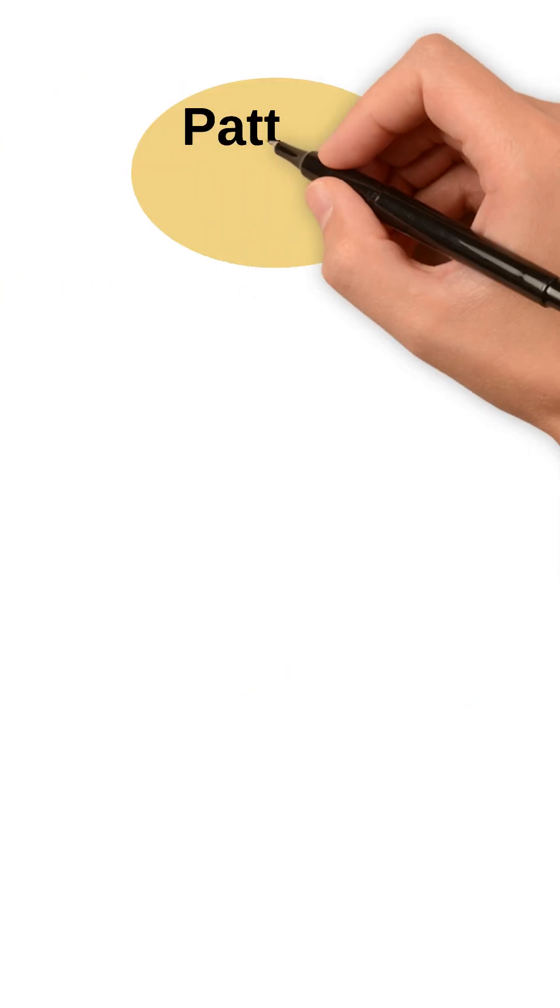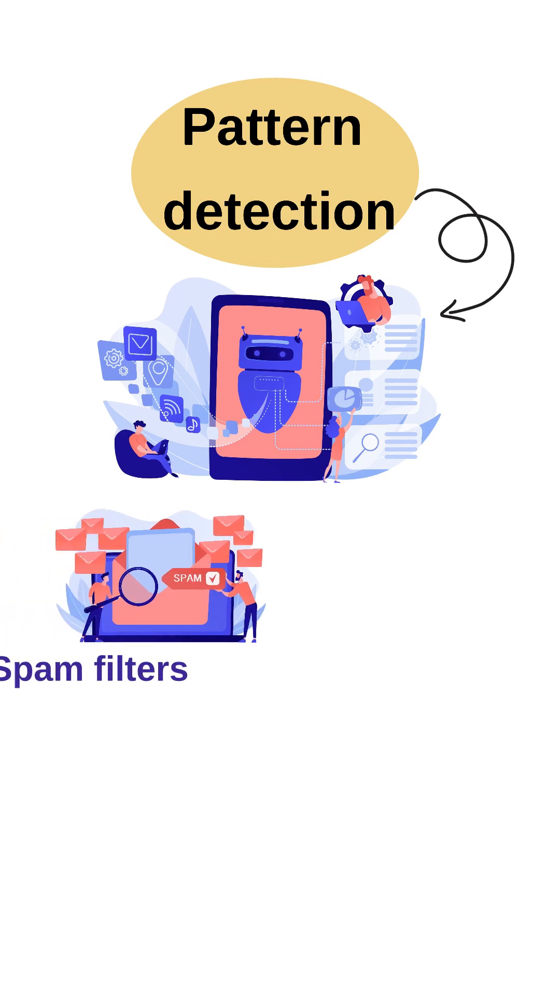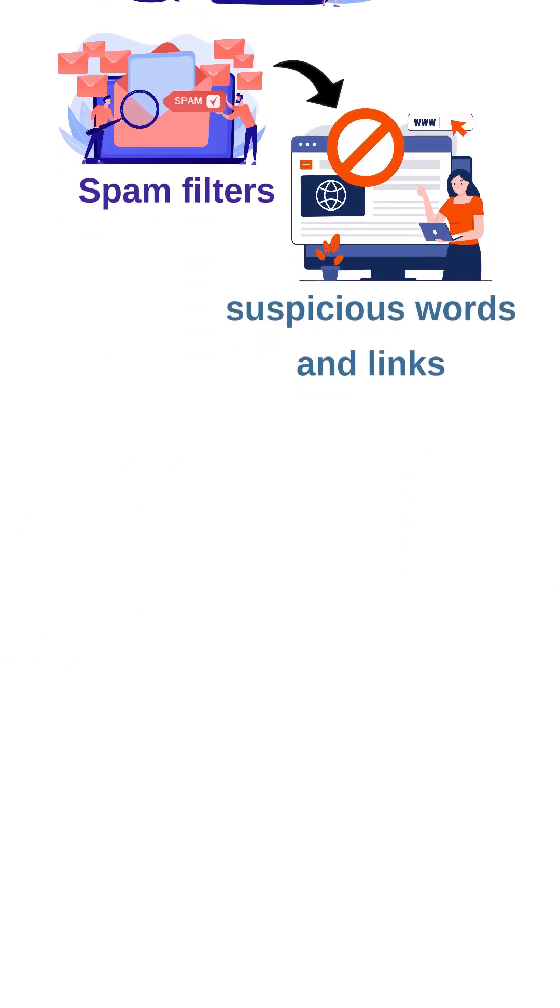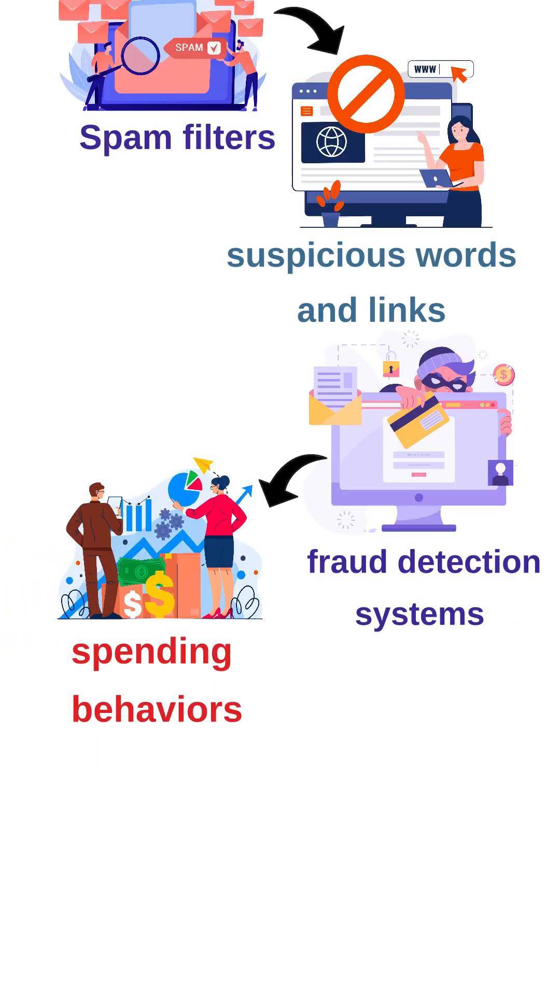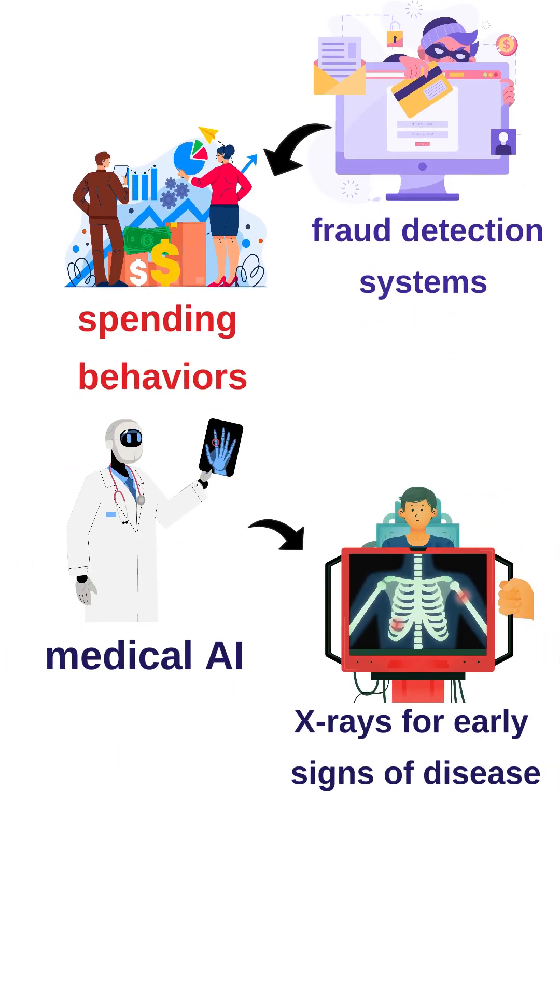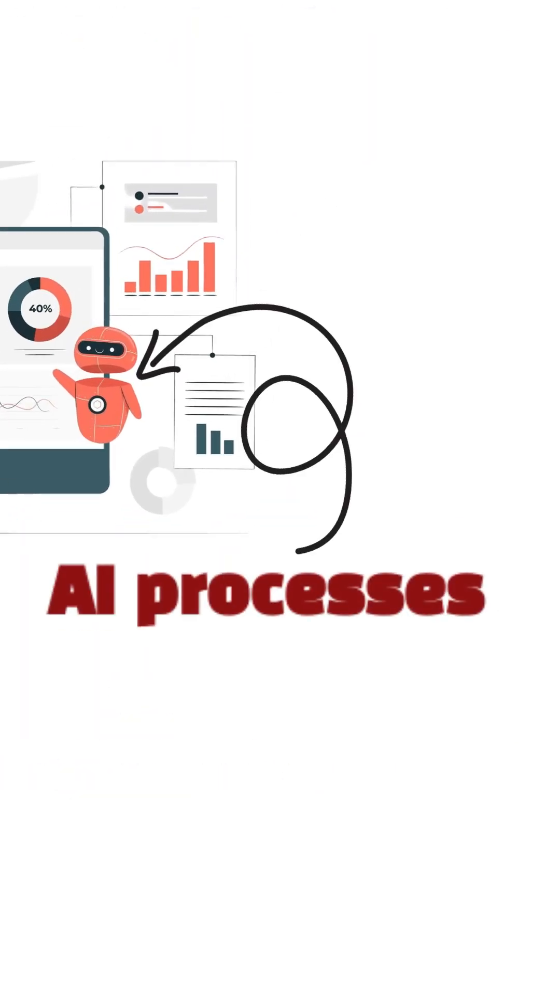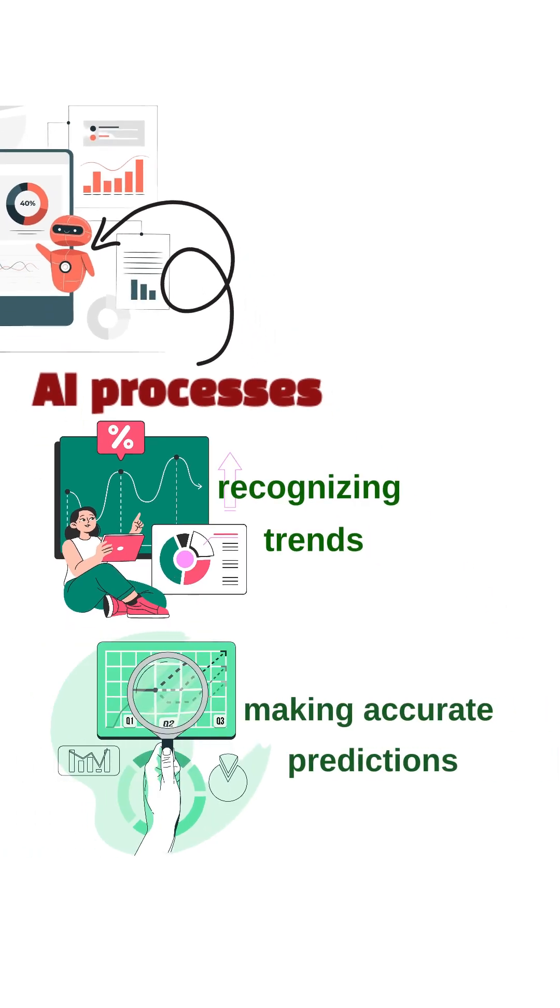Pattern detection is used in many AI applications. Spam filters detect suspicious words and links. Fraud detection systems analyze spending behaviors, and medical AI scans x-rays for early signs of disease. The more data AI processes, the better it becomes at recognizing trends and making accurate predictions.